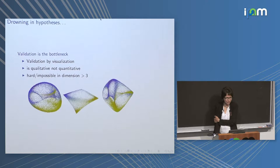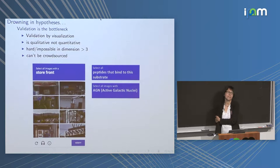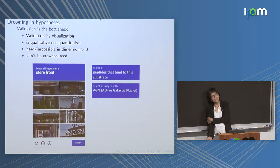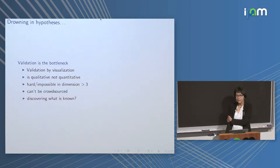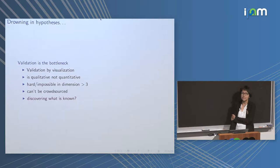Validation cannot be crowdsourced. It's one thing to check whether a program recognizes characters or storefronts, but it's another to recognize galaxies, active galactic nuclei, or binding sites — each of which is not a one-second task but several PhD theses. Moreover, if we ask scientists to validate what we do, we are going to stay in the science we already know. We want to find things that are true but surprising.